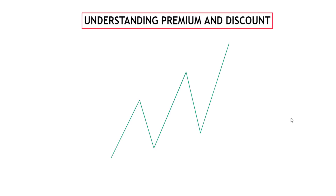Let me show you what exactly is premium and discount. But before you do anything with premium and discount, you must understand price range. When you see price move from here to here, that movement is what we call a price range, and we're going to define our price range using the Fibonacci tool.